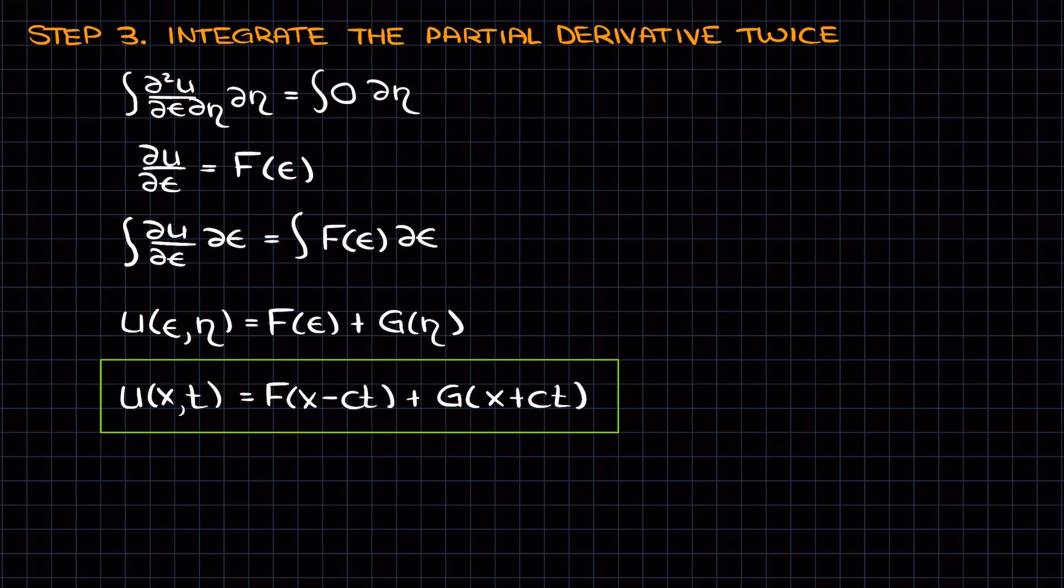In summary, we conducted a change of variables for d/dt and d/dx, squared them, plugged them into the wave equation and integrated twice to solve for u.